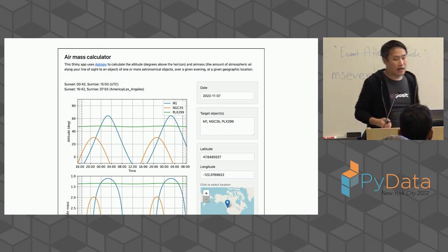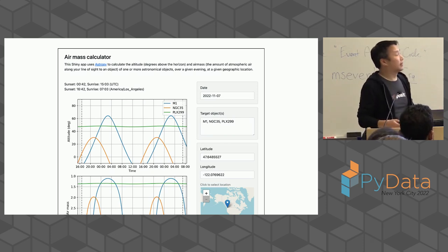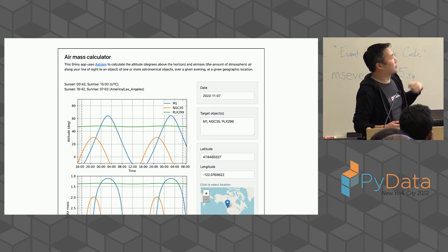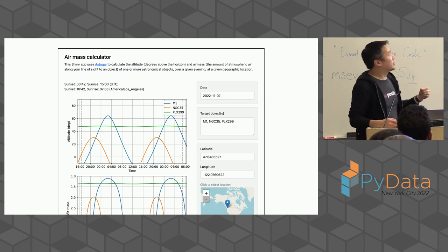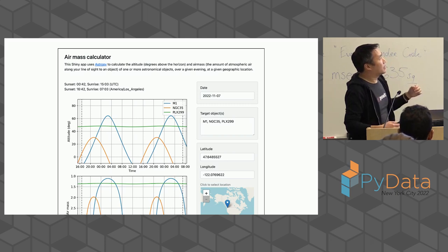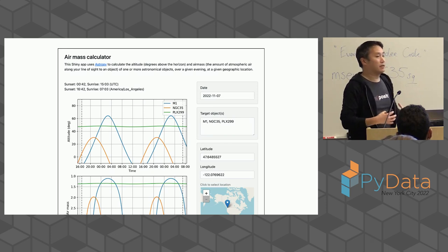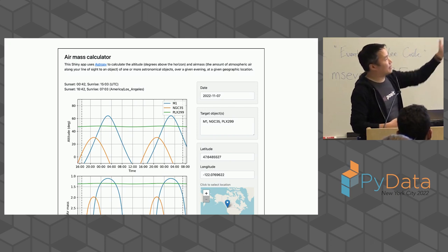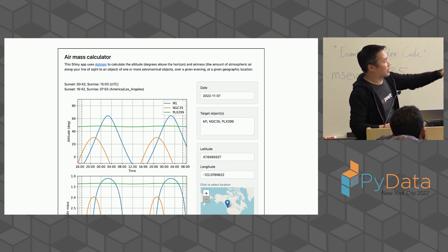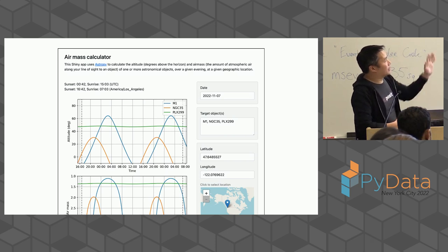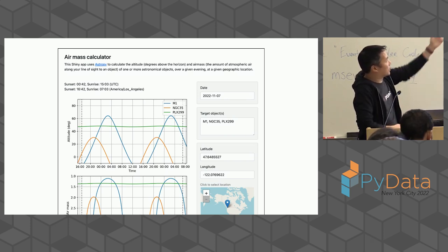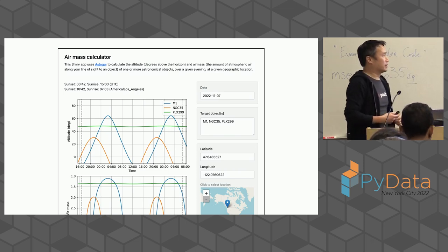Now let me show you an example of a more complicated user interface. This is an airmass calculator that uses the AstroPy Python package to give you information about when it's a good time to observe celestial objects. You tell it what date you plan to go out, the latitude and longitude you're operating from — you can click on the map — and the objects you intend to observe. It gives you plots as well as sunset and sunrise times for that day.